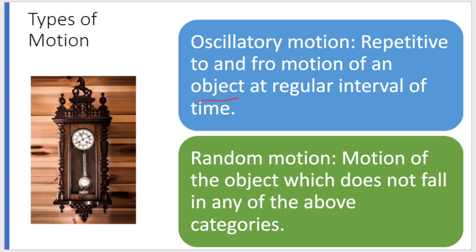To-and-fro motion at regular intervals is known as oscillatory motion. So we discussed three types of motions: linear, circular, and oscillatory. What is random motion? It is the motion of an object which does not fall in any of the above three categories.